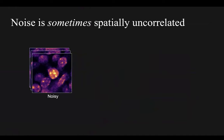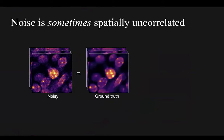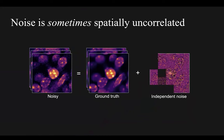The key insight for Noise2Void is that noise is sometimes spatially uncorrelated. The noisy image can be thought of as the sum of an underlying ground truth signal plus independent noise — the noise generated in one pixel is completely independent of noise in other pixels. This means the actual value of the noise in one location tells us absolutely nothing about the value of the noise in another location, in the same way that with Noise2Noise, the noise in one image tells us nothing about the noise in another image.